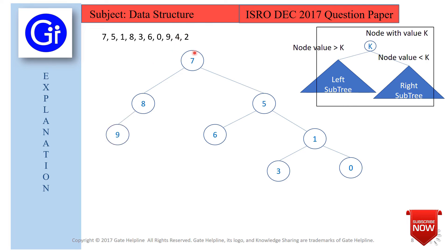Next is 4. Since 4 is less than 7 and less than 5, we go right. But 4 is greater than 1, so we go left at node 1. Then 4 is greater than 3, so it goes to the left of 3. After that we have 2. Since 2 is less than 7 and less than 5, we go right. Since 2 is greater than 1, we go left. Then 2 is less than 3, so 2 goes to the right of 3.